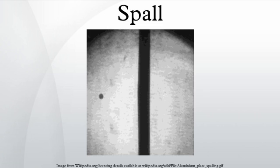Spall are flakes of a material that are broken off a larger solid body and can be produced by a variety of mechanisms, including as a result of projectile impact, corrosion, weathering, cavitation, or excessive rolling pressure.